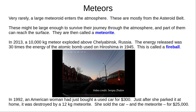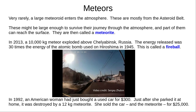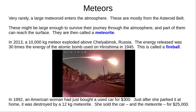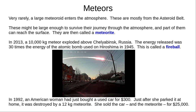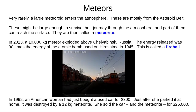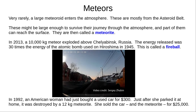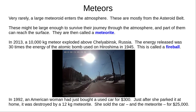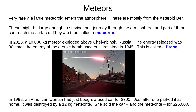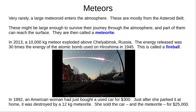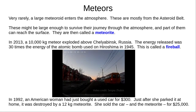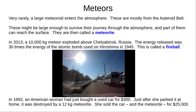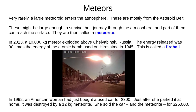Rarely, a large meteoroid enters Earth's atmosphere. These are typically rocks from the asteroid belt, or occasionally the Moon or Mars. Very large rocks can survive their trip through the atmosphere without completely burning up. The part that reaches the surface is called a meteorite. In 2013, a 10,000 kilogram meteor exploded a few kilometres above Chelyabinsk in Russia, releasing 30 times the energy of the atomic bomb used on Hiroshima in 1945. This is called a fireball.